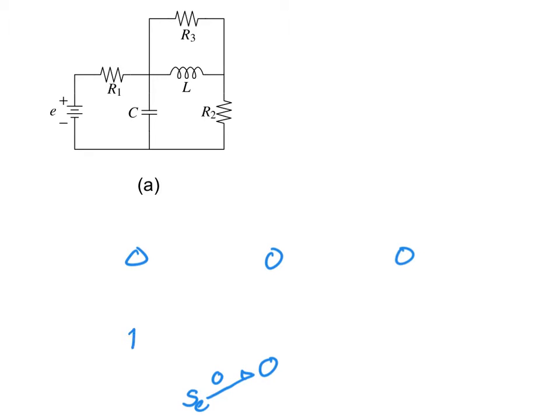I'll begin by inserting between this zero junction and this zero junction an effort source to represent the battery. And between this and this, I'll insert an R element to represent the first resistor.